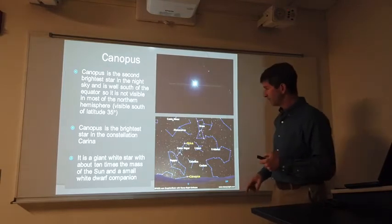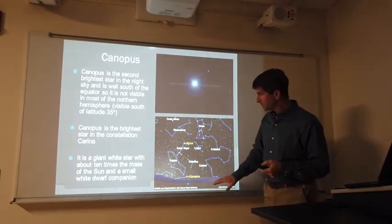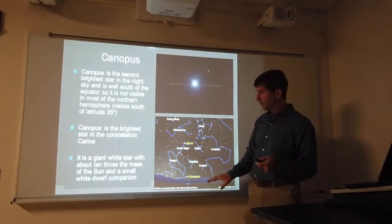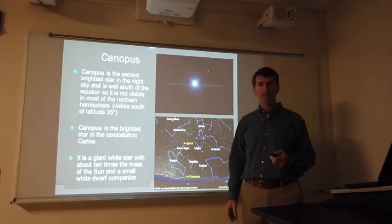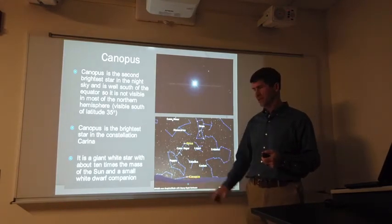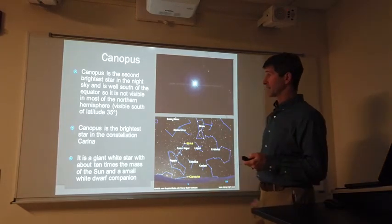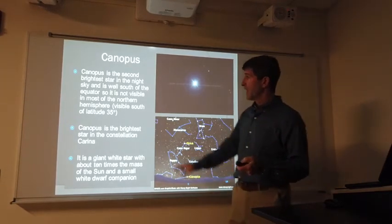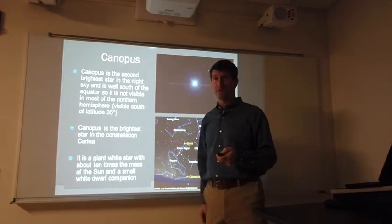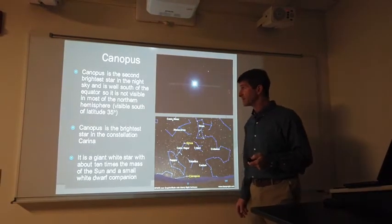Canopus, again, here's Orion. Here's Sirius. Here's what it would look like if you were down probably, you have to go down to about Florida. From Florida's location, you can just see Canopus getting high enough in the sky to see. That's the second brightest star in the sky. But anywhere north of latitude 35 degrees, you're not going to be able to see Canopus.